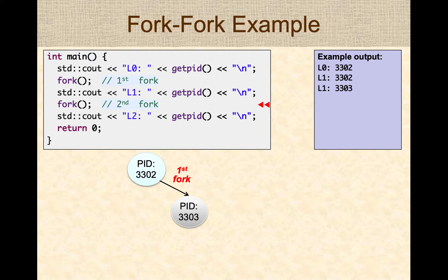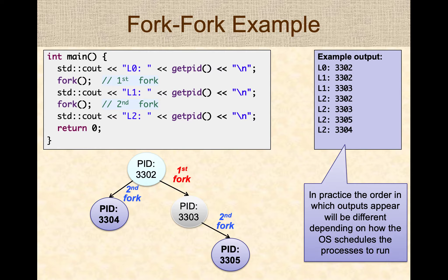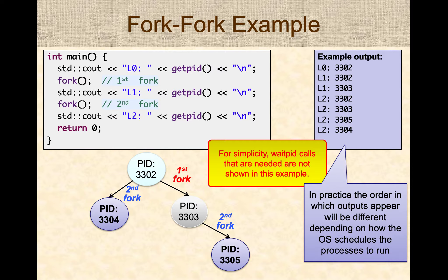Then both processes go to the next line and both of them fork. Since two processes are forking, you will have four processes at the end of this fork call, as shown in the picture below. Then four processes will start running the next line of code and print four lines of output. All four processes will finally finish and return zero. So make sure you have this mental model: every fork doubles the number of processes. Keep in mind that in practice, the order in which the outputs appear is not deterministic because it depends on how the operating system schedules these different processes. And in this simple example, we haven't shown the waitpid calls. Typically, you will always have a call to waitpid to wait for the child processes to finish — otherwise, if the parent process finishes before the child, all child processes will be automatically terminated by the operating system.